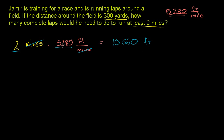Let me actually multiply it out to verify that 5,280 times 2 is indeed 10,560. So: 2 times 0 is 0; 2 times 8 is 16, carry the 1; 2 times 2 is 4, plus 1 is 5; 2 times 5 is 10 — giving us 10,560.